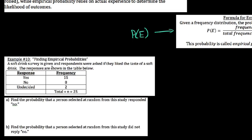A soft drink survey was given, and respondents were asked whether they liked the taste of a soft drink. Our choices here are yes, no, or undecided, but you notice we did collect data on these things. The total number of people here is 25. So we had 15 yeses, 8 noes, and 2 undecided. So perhaps we want to find the likelihood that a person selected at random from the study responded no.